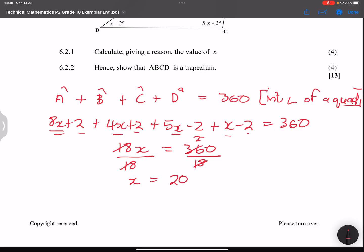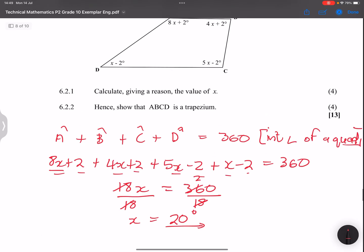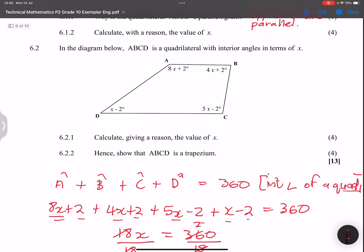So x is equal to 20 degrees. Now they say, hence show that ABCD is a trapezium. Now, firstly, why would it be a trapezium? I can see that none of the sides are equal.